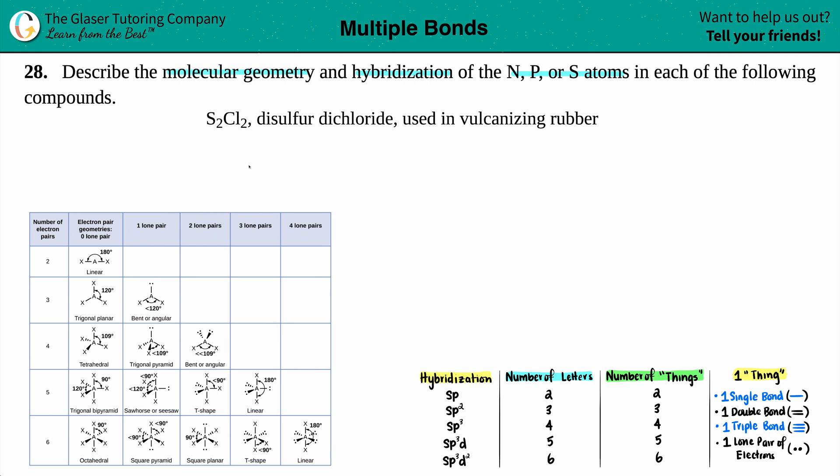But we are in the learning stages here, so just doing that one extra step—drawing the Lewis structure—will get you to the molecular geometry and hybridization.